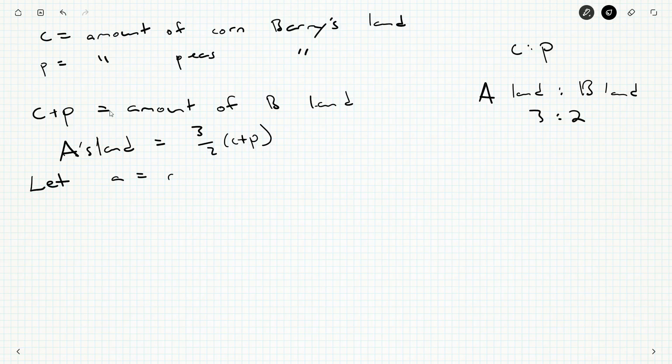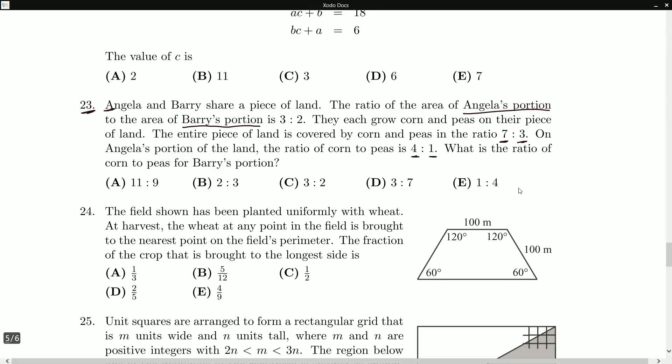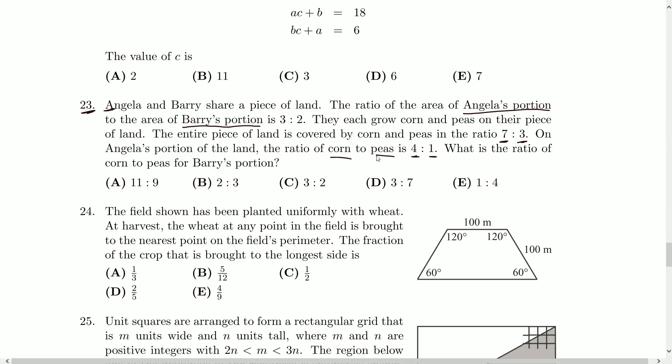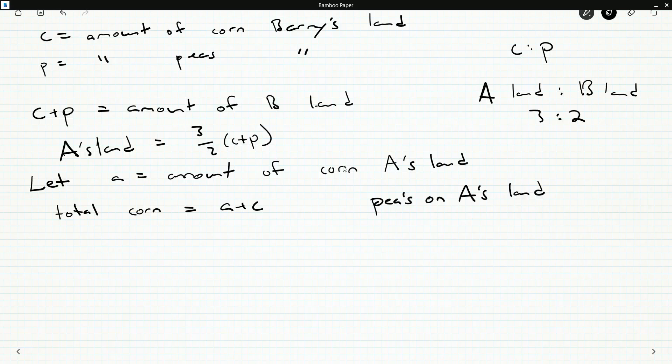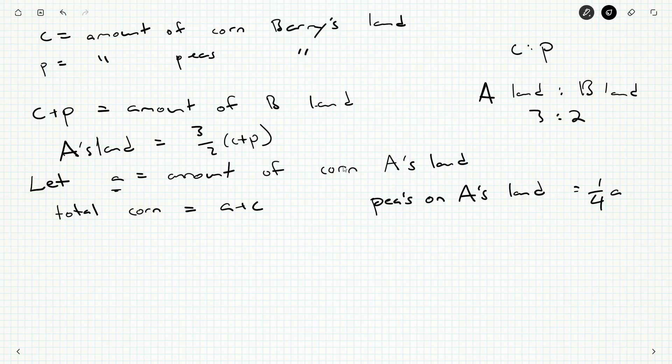Then I know the total amount of corn or total area devoted to corn is A plus C. I also know that the amount of peas on Angela's land is, so it's four to one and it's also corn to peas. So she has four times as much corn as she has peas. Or another way to say it that if I know the amount of corn on Angela's land, one quarter of that is the same as peas.